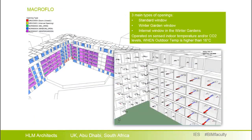Microflow simulates air flow patterns around and through buildings operating through openings. We set three types of windows: main windows, standard ones, and those on the winter gardens on the external and internal sides. In order to replicate user behavior, we set schedules according to likely user patterns — users will tend to operate windows when necessary and when the outdoor temperature is at least above 16°C so that it is comfortable. We also included some inefficiencies to replicate user behavior more consistently.